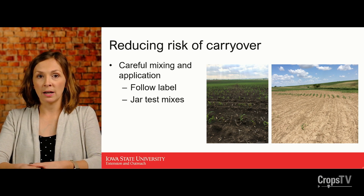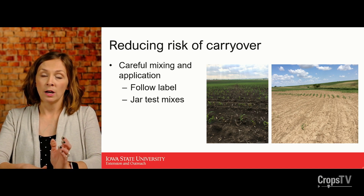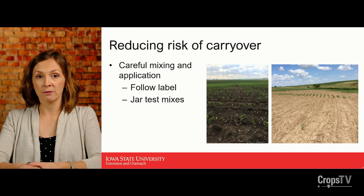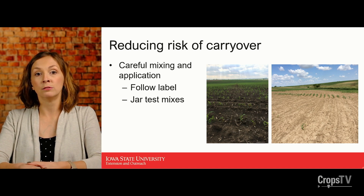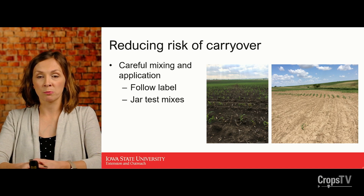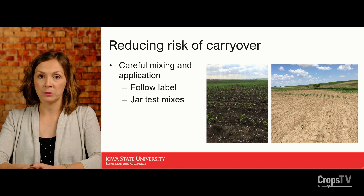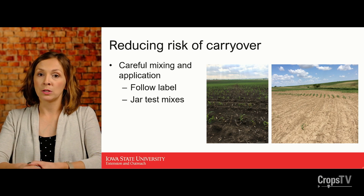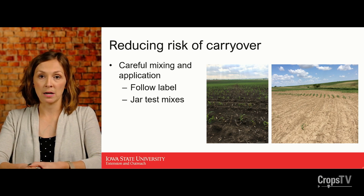In one image on the left, you can see stripes through the field where a dripping nozzle applied a higher rate of a fomesafen product across the entire prior-year field, killing corn growing right in that stripe the following year. On the right, this was again a compatibility problem that resulted in a lot of dead corn the following year due to the application problems in soybean.